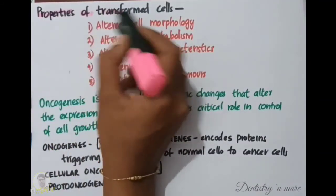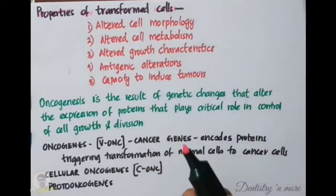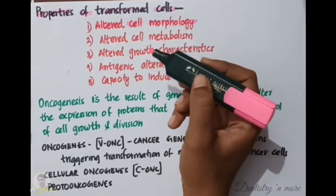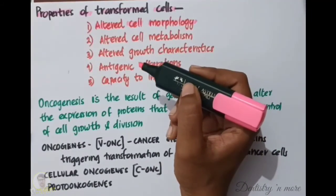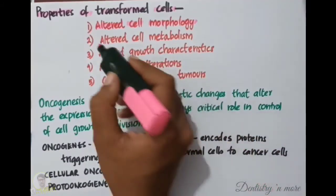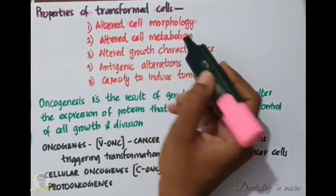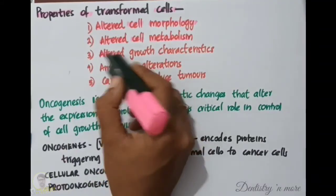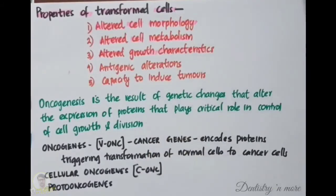The properties of transformed or malignant cells are as follows. First, altered cell morphology: fibroblasts become shorter, parallel orientation is lost, and chromosomal aberrations are observed. Second, altered cell metabolism: there is increased growth rate and increased production of organic acids and acid mucopolysaccharides. Third, altered growth characteristics: loss of contact inhibition and formation of heaped-up microtumors.